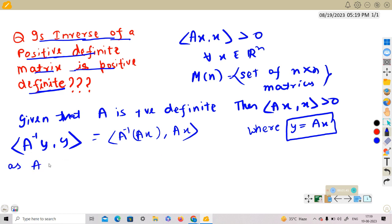As A is invertible, A is onto. So for y, there exists x such that y is equal to Ax.